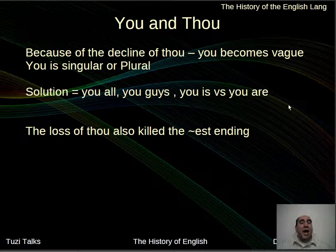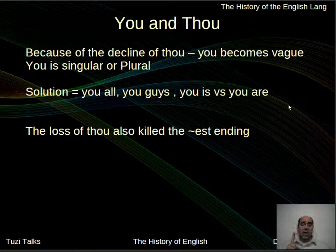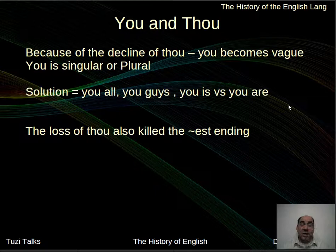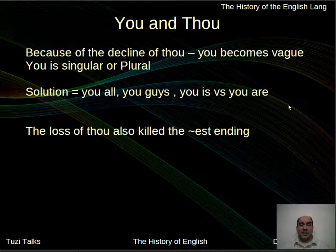Because of the decline of thou, 'you' has become vague — is it singular or plural? 'I want you to go' — is it one person or many? We don't have a separate word for that distinction anymore. Today we use workarounds like 'you all' or 'you guys' to compensate. The loss of thou also meant saying goodbye to the verb endings associated with it — comest, goest. Those are gone too. Closer to Elizabeth and Shakespeare's time, these forms were being set aside.